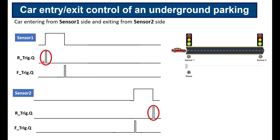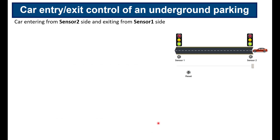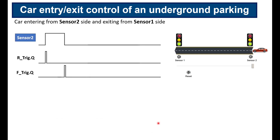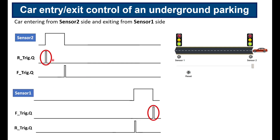When the car moves from right to left, two pulses are important: the first determines that the car has entered the passage, and the second determines that the car has exited, so we can turn on the green light. When the car moves from left to right, sensor two fires first then sensor one, and again the two pulses generated by R_TRIG and F_TRIG determine when the car entered and when it exited the passage. This is how we determine the state of the pilot lights.